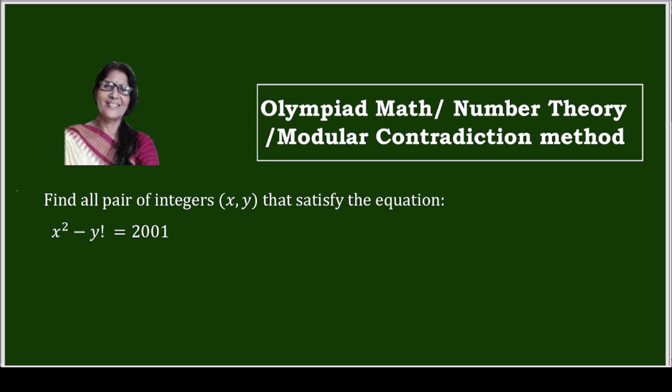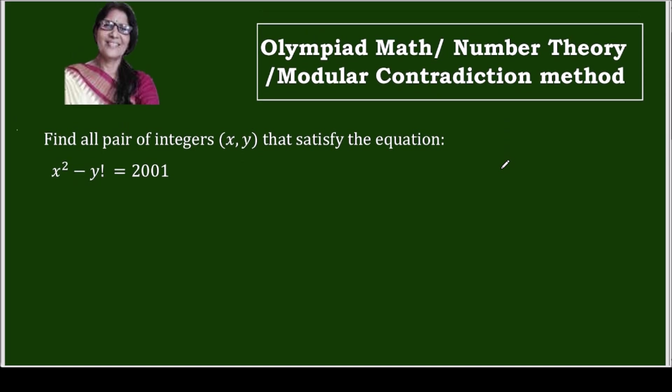And this question will solve by modular contradiction method. Now what's it? Let I am supposing or taking y greater than or equal to 7.